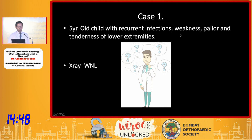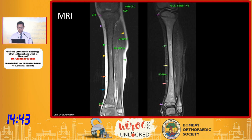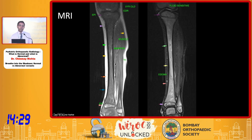Let's look at the first case. It's a five-year-old child with recurrent infections, weakness, pallor, and tenderness of the lower extremities. When you look at the T1 image of a five-year-old and compare it with this patient, we see that it is diffusely hypointense on T1 — it is darker than the muscle. So this is not red marrow; it is something that has replaced or infiltrated into the normal fatty marrow.